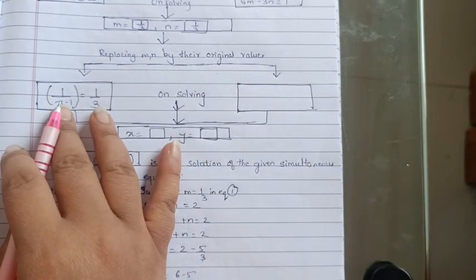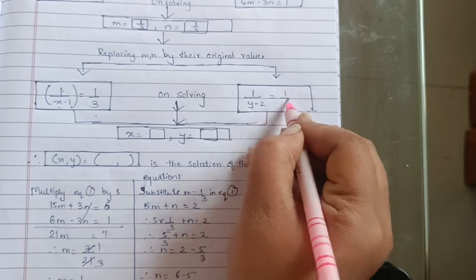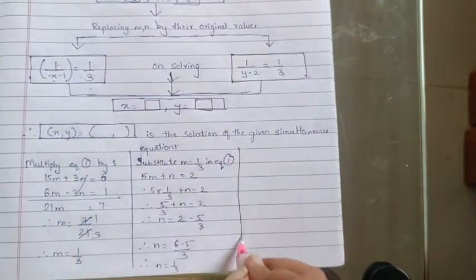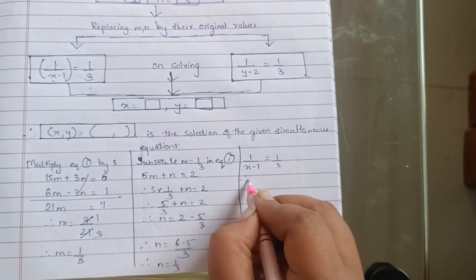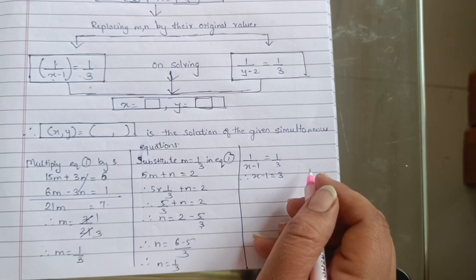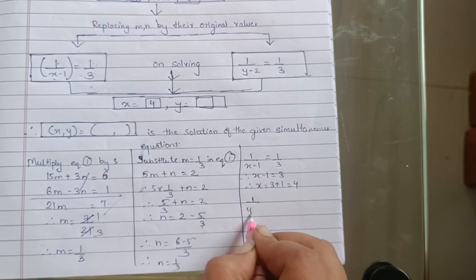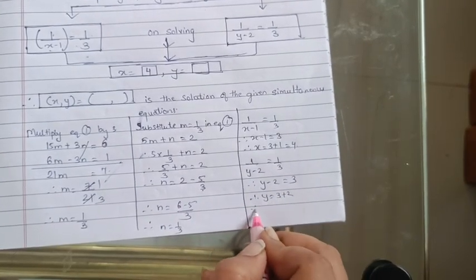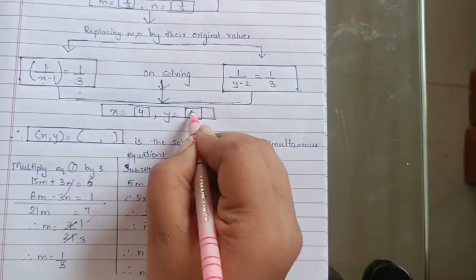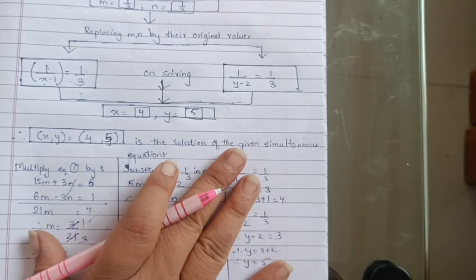Now we replace back with original values. 1/(x−1) = m = 1/3, and 1/(y−2) = n = 1/3. So x−1 = 3, therefore x = 4. And y−2 = 3, therefore y = 5. So x = 4 and y = 5 is the solution of the equation. Now let's move to Practice Set 1.4.